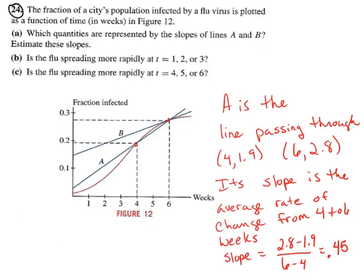And that's the amount affected per week, the fraction affected per week. And then B, line B right here, that's the instantaneous rate of change at week 6.